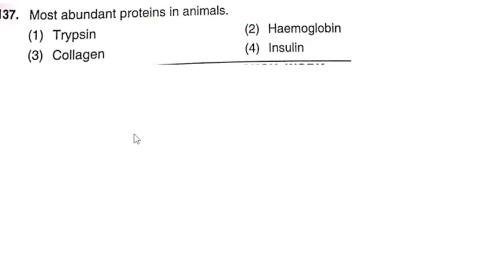Next question: The most abundant protein in animals. Options: trypsin; hemoglobin; collagen; insulin. The correct option is option 3: collagen.